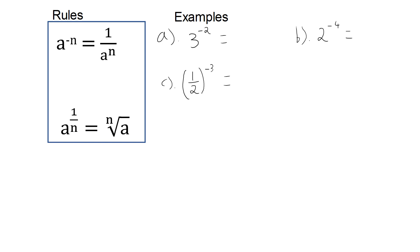3 to the minus 2 is going to be 1 over 3 to the power of 2. We can see a is equal to 3 in this example, and n is equal to 2. 1 over 3 squared is going to be 1 ninth.